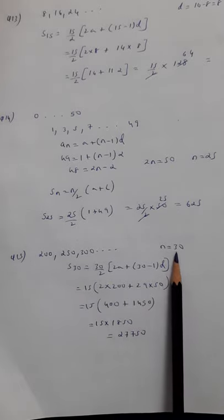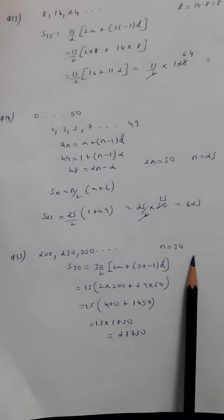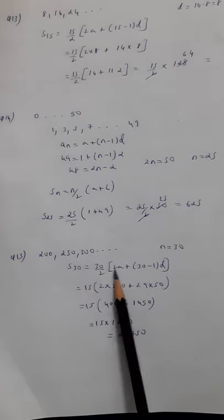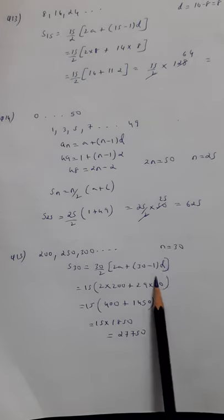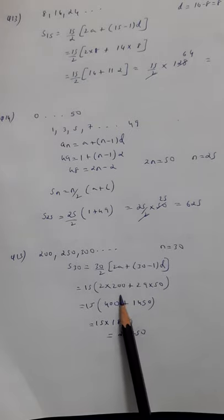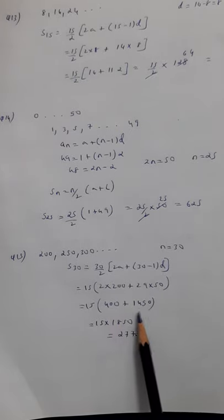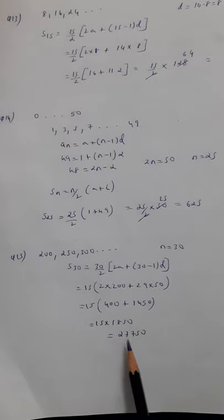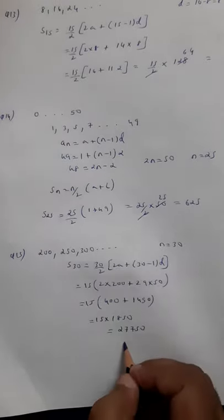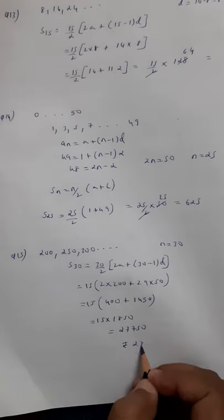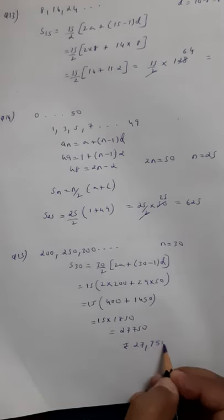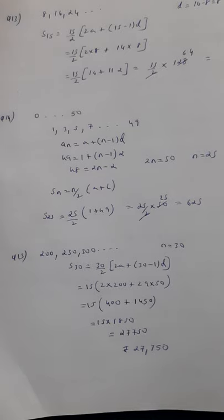We know that this is a series of 30 because there are 30 days. a value is 200 and common difference is 50. So I am calculating this: we get 400 plus 1450 equals 1850, and therefore 27,750. Therefore, what is the total fine? You will have to write rupees 27,750. So that's the total fine that has to be paid.